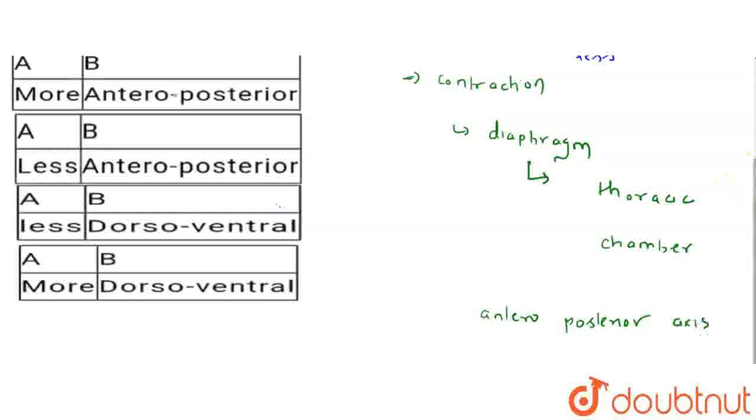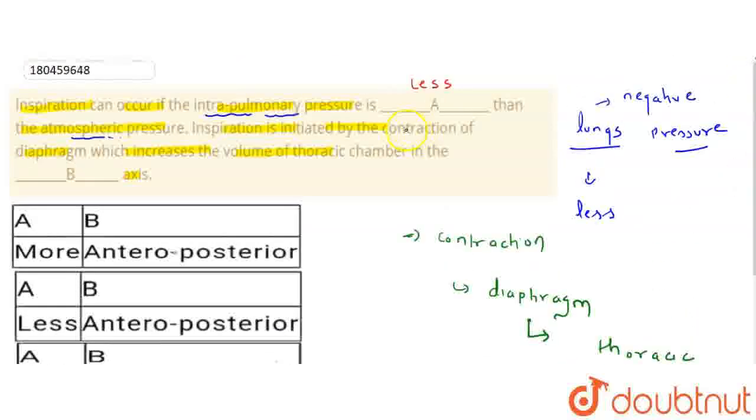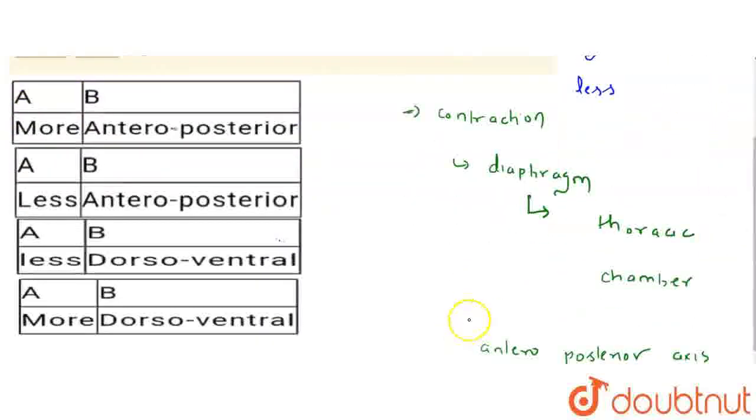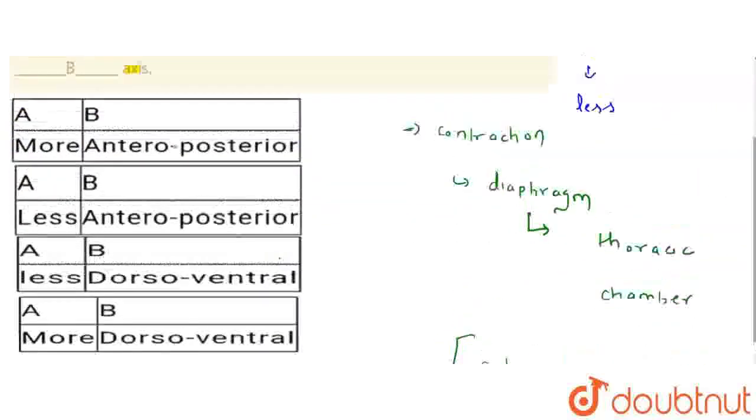in the anterior-posterior axis. This is about inspiration. So, A blank is less. The volume increase in thoracic chamber is in the anterior-posterior axis.